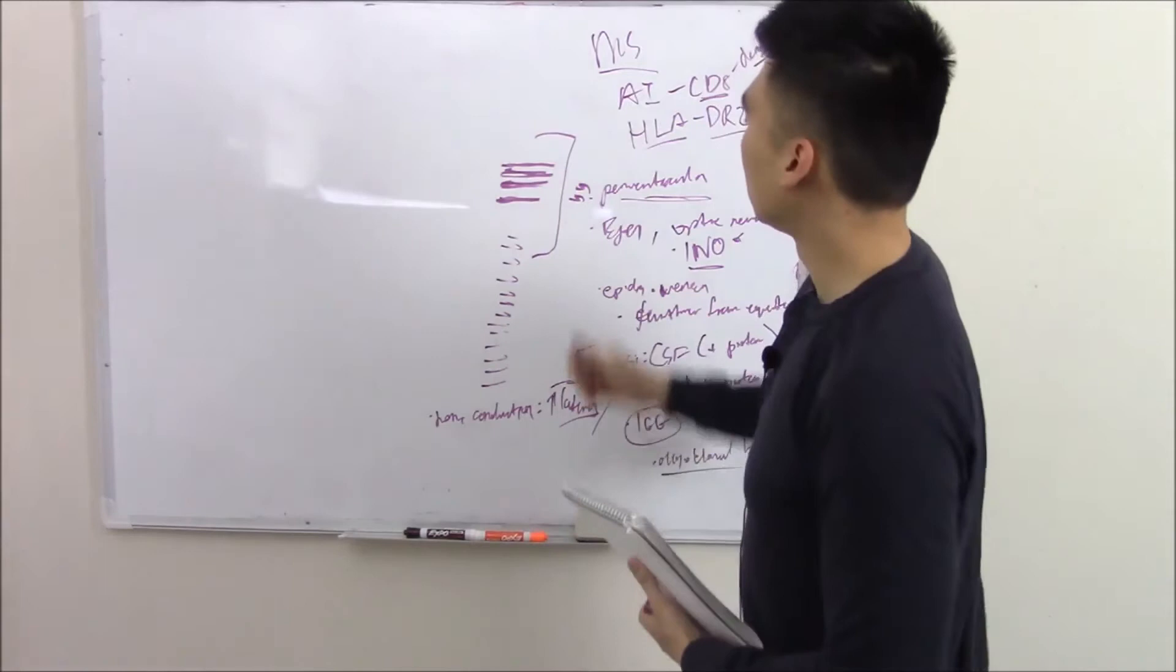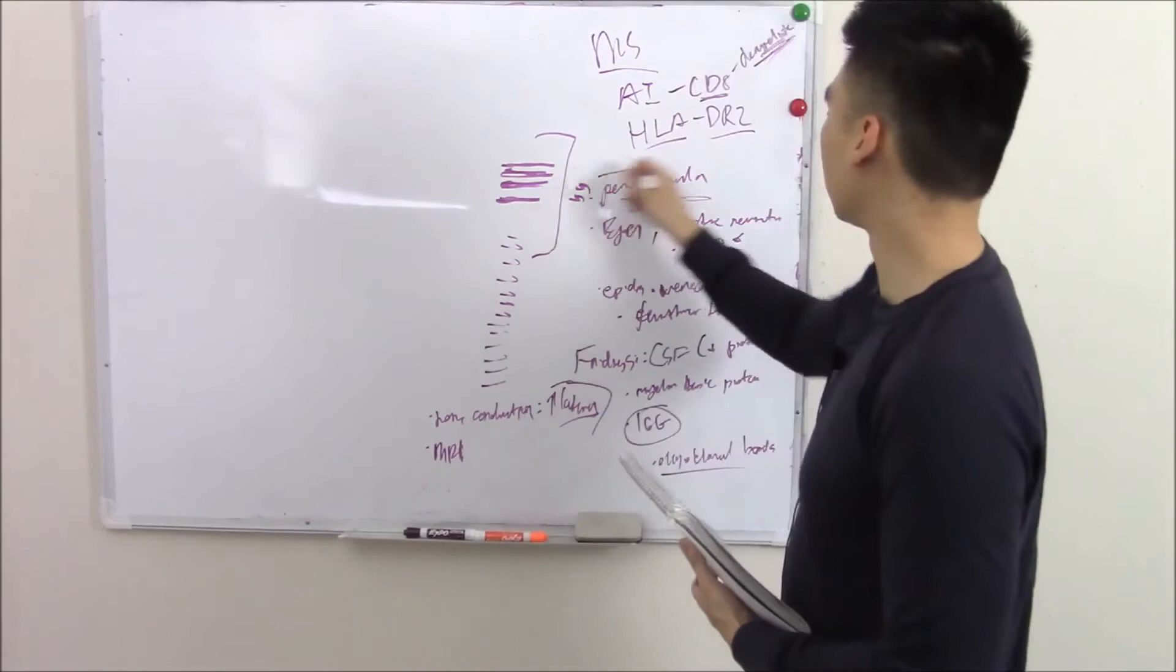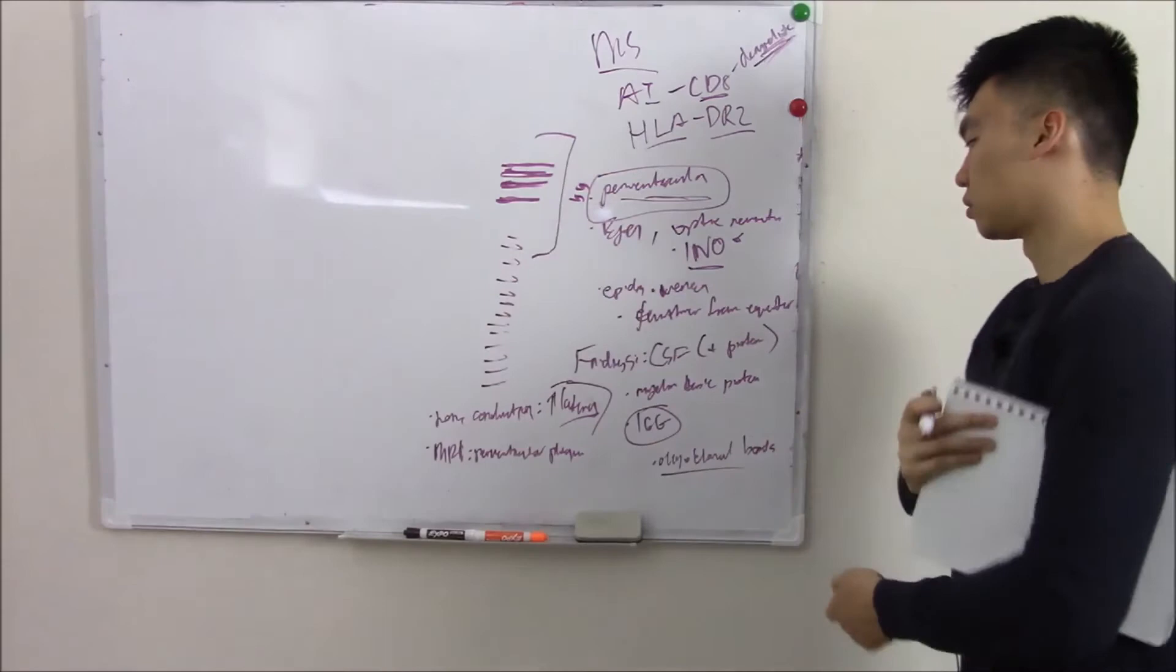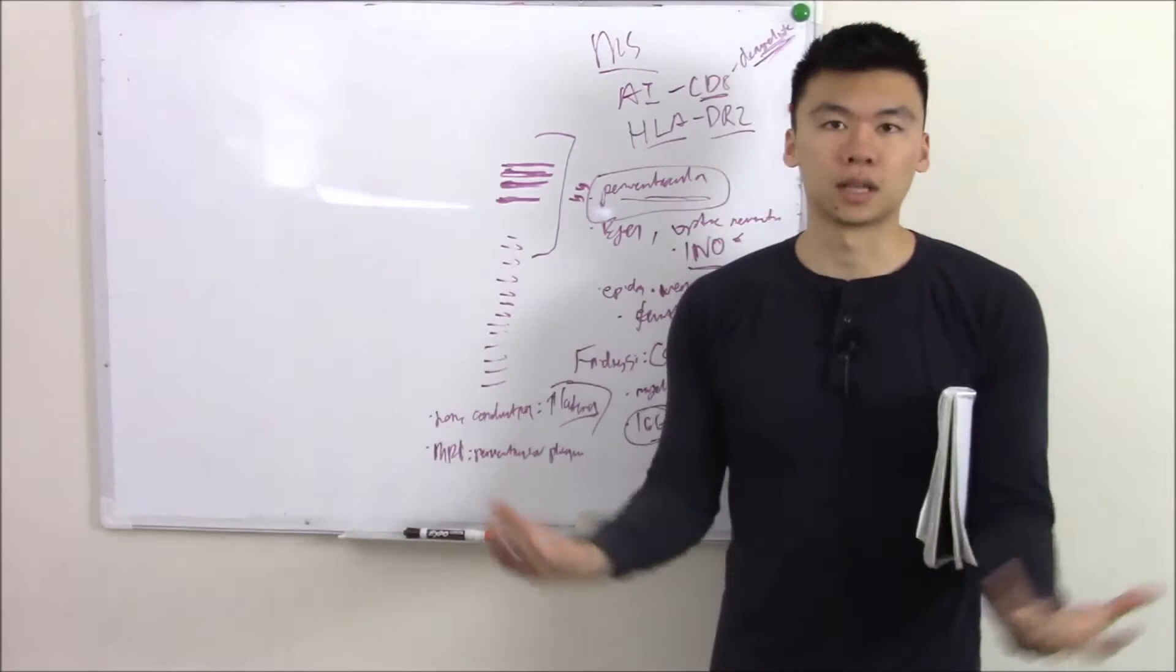On MRI, on imaging, you're going to see these periventricular plaques. So using all of this together—using your clinical skills, your history taking, your lab findings and your imaging—you can come together and say this patient has MS. Now, how do we treat MS?